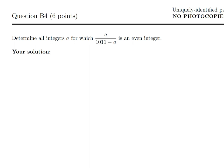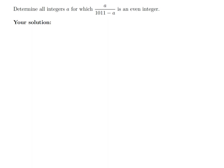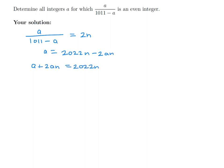Determine all integers a for which a/(1011 − a) is an even integer. Since all even integers are of the form 2n, set a/(1011 − a) = 2n. Doing some algebra: a = 2022n − 2an, so a + 2an = 2022n, and factoring gives a(1 + 2n) = 2022n, therefore a = 2022n/(1 + 2n).